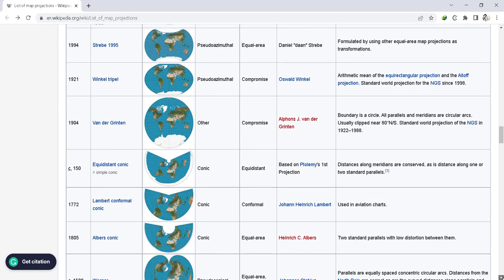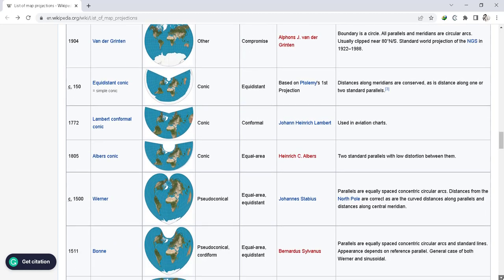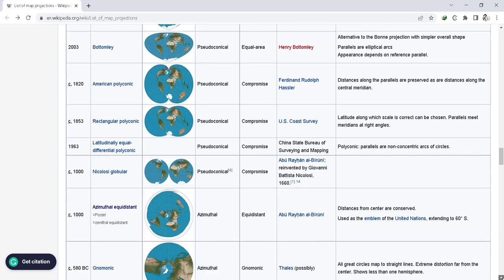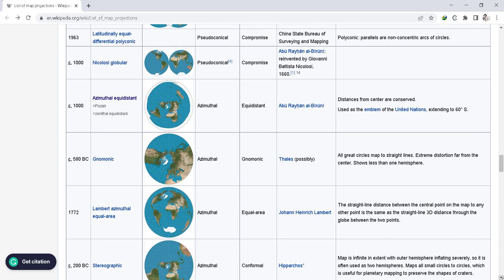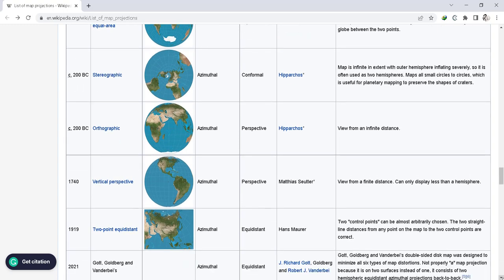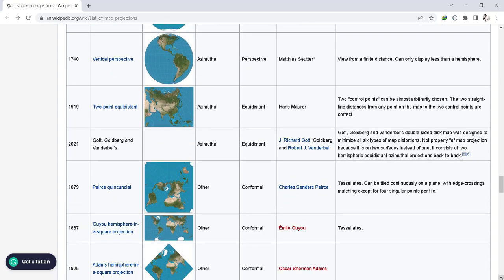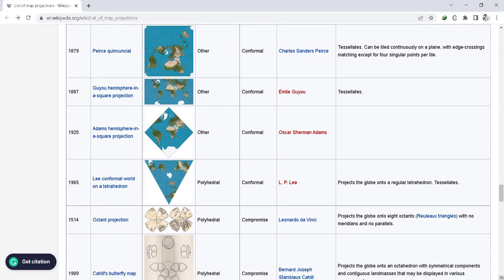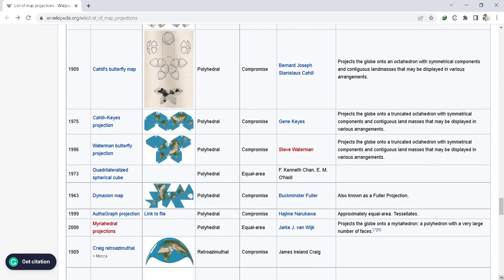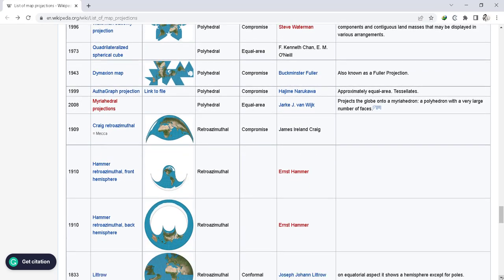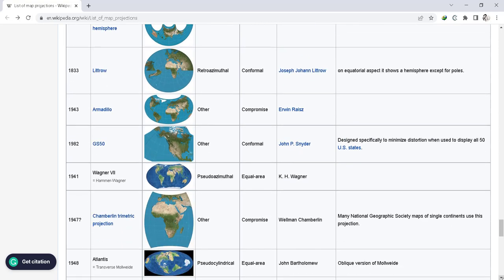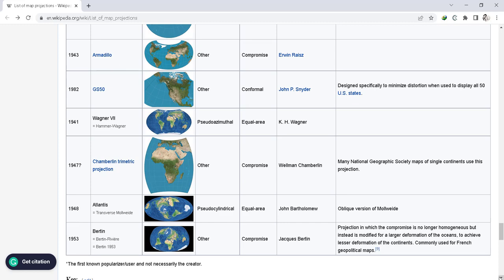In the next column we have properties - whether the projection is equidistant, compromised, or conformal. After that we can see the name of creator, followed by the notes in the last column, which comments on the intention, standards, or mathematics behind each projection. We will quickly go through all the projection types as we cannot discuss all of them one by one in this short video. You can review them in detail on wikipedia.org by searching for list of map projections.